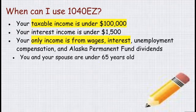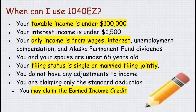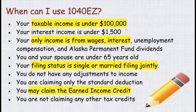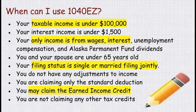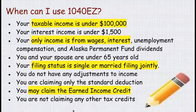So how do you know if you can use the 1040EZ? The 1040EZ is the easiest tax return to file, so if you can use it, it would be worth it. Is your taxable income under $100,000? Is your interest income under $1,500? Do you only have income from wages or interest? Are you and your spouse both under 65 years? Is your filing status single or married? You do not have adjustments to income, you claim only the standard deduction, and you may claim the earned income credit. You cannot claim any other tax credits. The key things are income — you have to be under the income threshold, you can't have any children, and you mostly just need to have wages. If you fit into this category, then you can file 1040EZ.